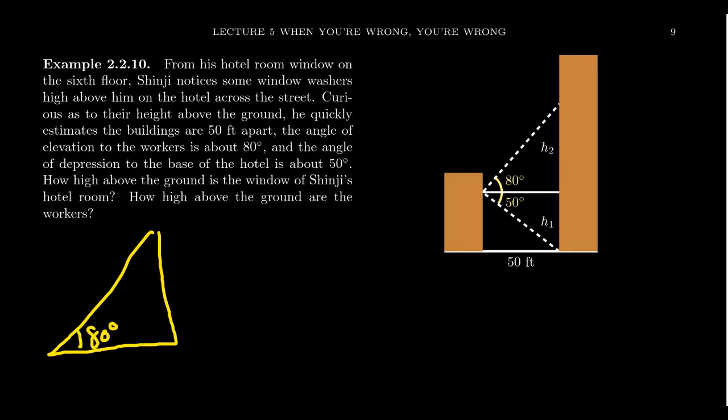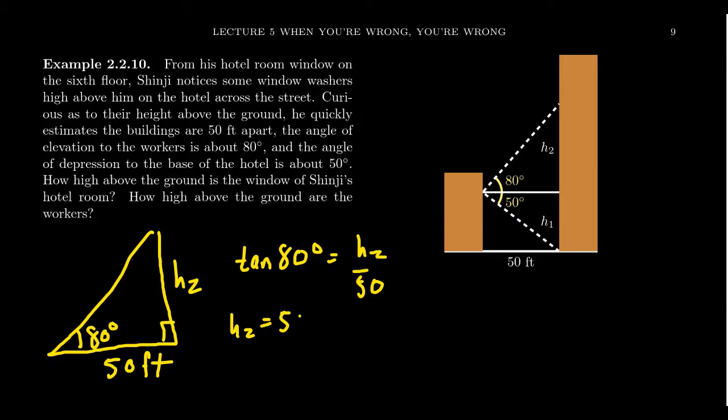And as he is 50 feet away from the other building, we get 50 down here as the adjacent side of this right triangle. We need to estimate the H2 here. This would be the height that the window washers are above Shinji. And so we could estimate this using a typical tangent ratio. Notice that tangent of 80 degrees would equal H2 over 50. Clearing the denominator, we get H2 is going to equal 50 times tangent of 80 degrees. That would be this vertical distance right here.